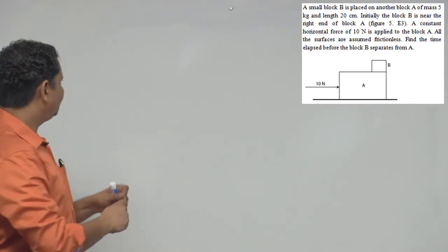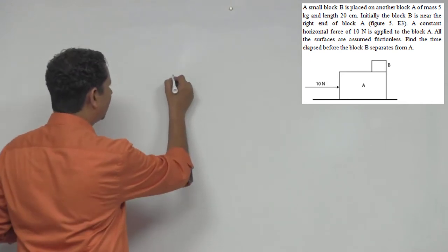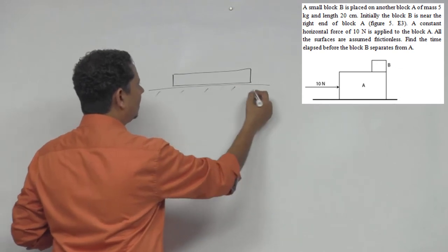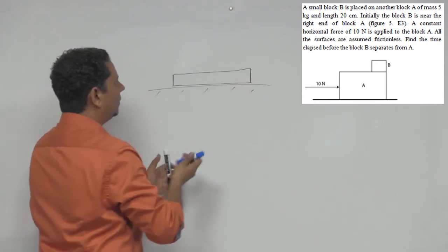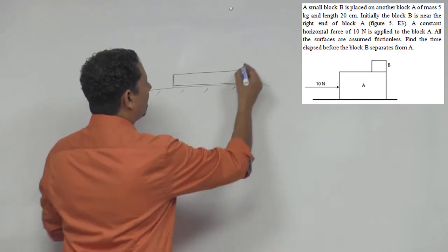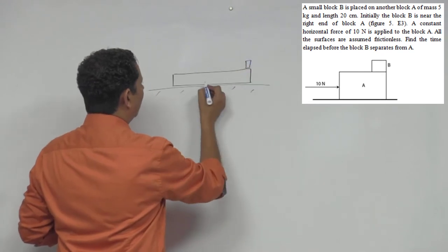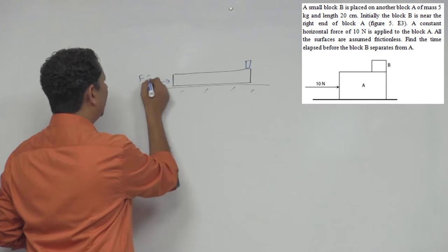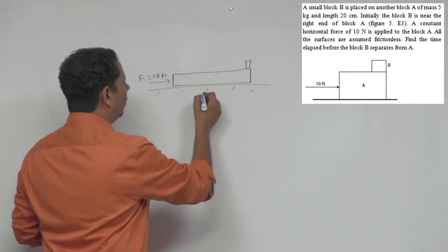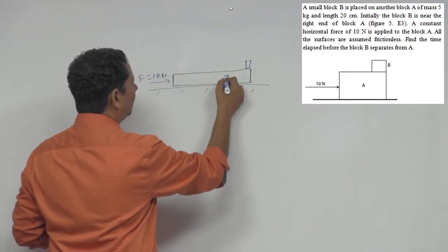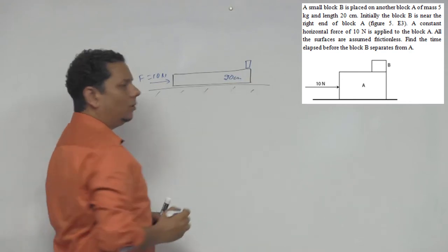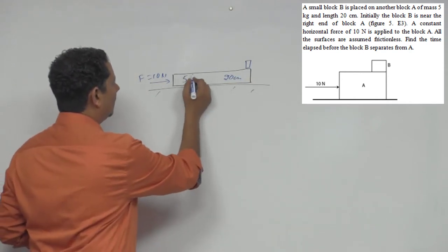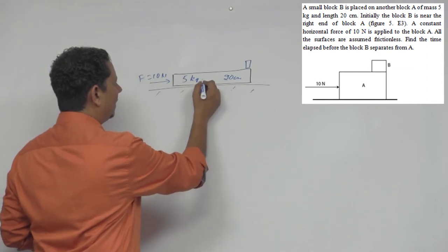Simple sawal hai. The scenario is like this: You have block A placed on the ground, the surface is frictionless. The second B block is placed on A, it's a small block. On this A block, you have applied a force of 10 N, and its length is 20 cm, and its mass is 5 kg.